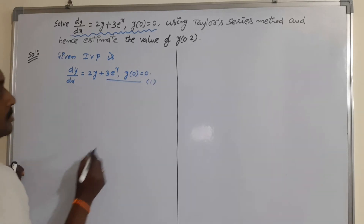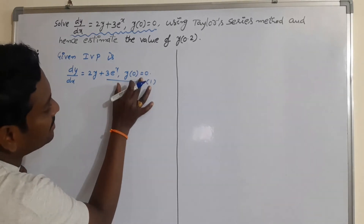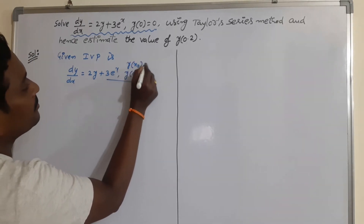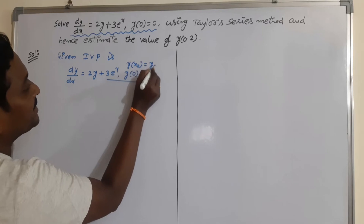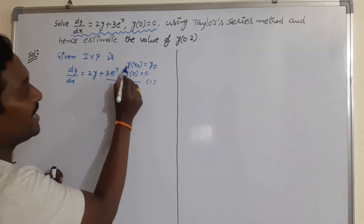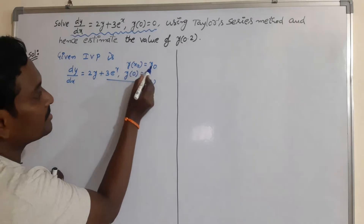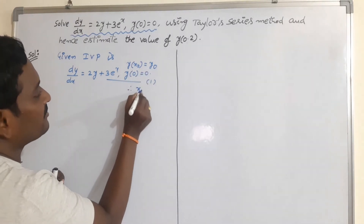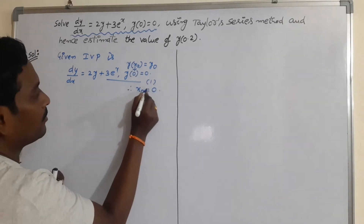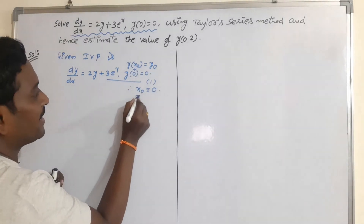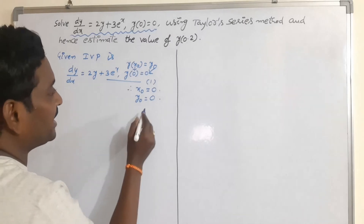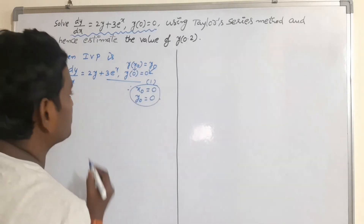Compare the given initial condition with the general form y(x₀) = y₀. The x₀ value is 0, and the y₀ value is also 0. Both are provided as 0. Don't forget these values.